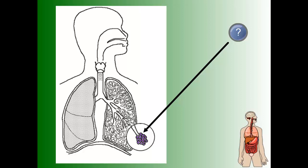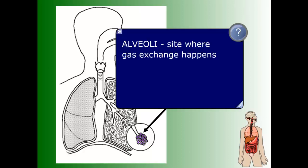This structure that looks kind of like grapes in the diagram is probably by far the most important structure in the respiratory system. This little bunch of cells is called the alveoli, and this is the site where gas exchange happens — where essentially all your breathing takes place. A very important structure in the respiratory system.